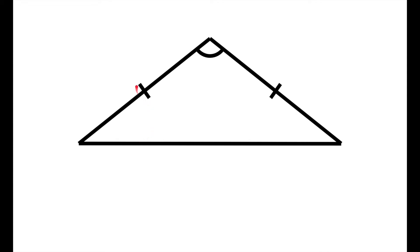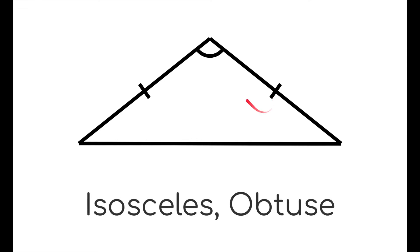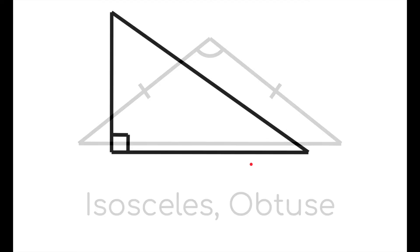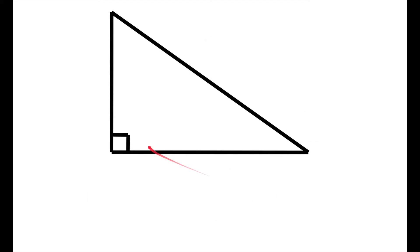Because there are two sides that are the same, it is an isosceles triangle. And because there is one angle that's more than 90 degrees, it is also an obtuse triangle.